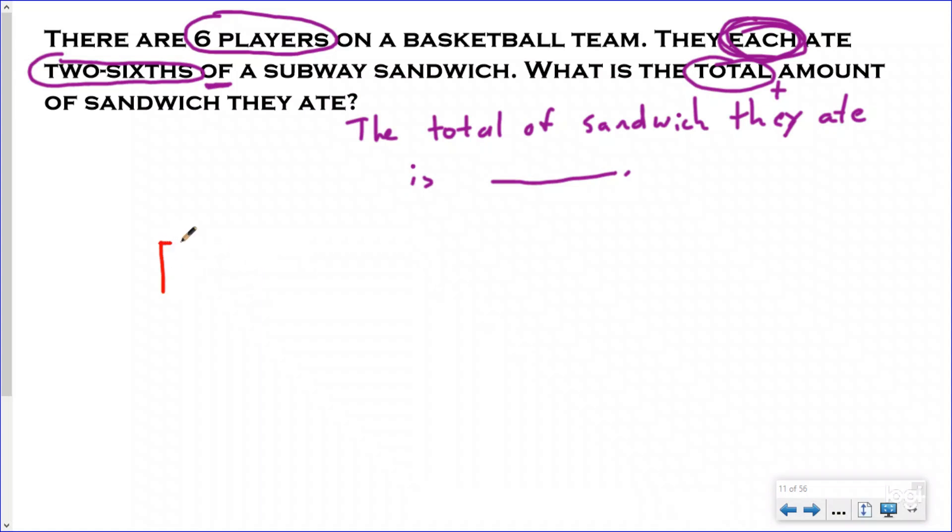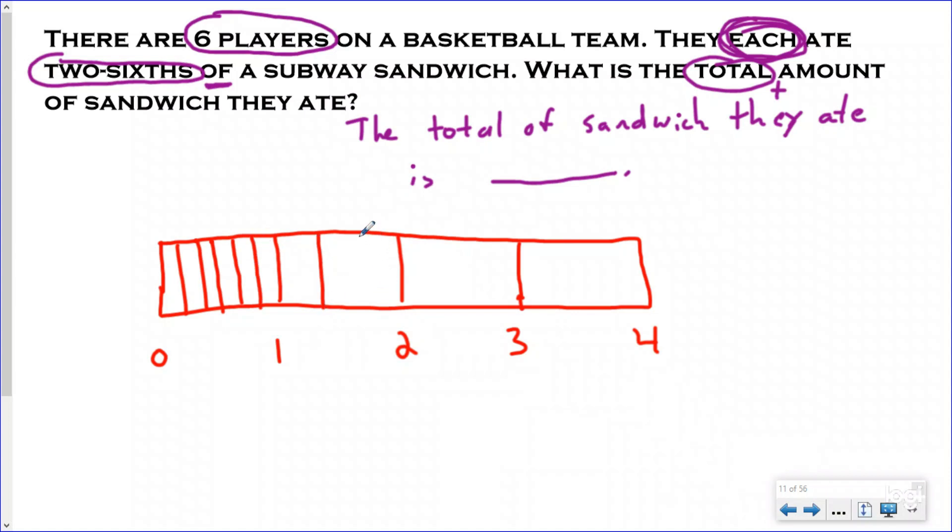So I'm going to be drawing my tape diagram here and I know, there we go, that they are going to each eat 2/6. So I'm going to split this into fourths here and I'm going to label this as one, zero, one, two, three and four. So this is four wholes put together. I see my denominator is six, which means each of these is going to be split up into six pieces. So each of my wholes will be six because that was my denominator. So I split it into thirds, and then in each third into half, which gives me six total pieces for each.